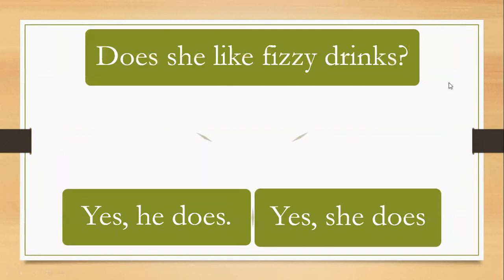Let's go next. Does she like fizzy drinks? We have a question. Let's catch the correct answer. We're starting with does. If we start with does, we should after that write the subject, she. The answer depends on this question. Let's go to catch the answer. Yes, he does or yes, she does. What do you think? Because we have she, we're going to choose she. Excellent. So the answer, yes, she does. Well done.